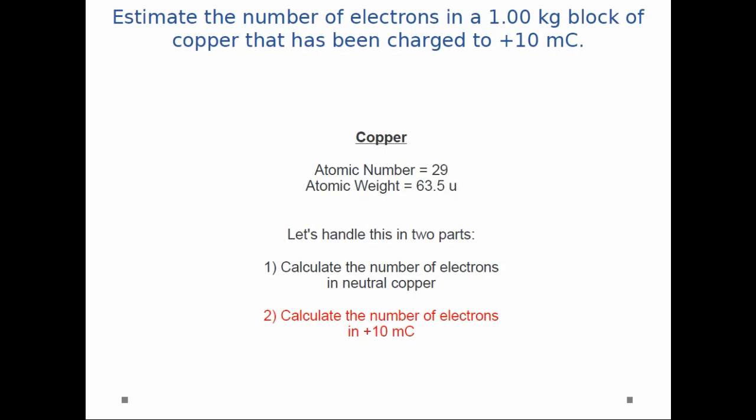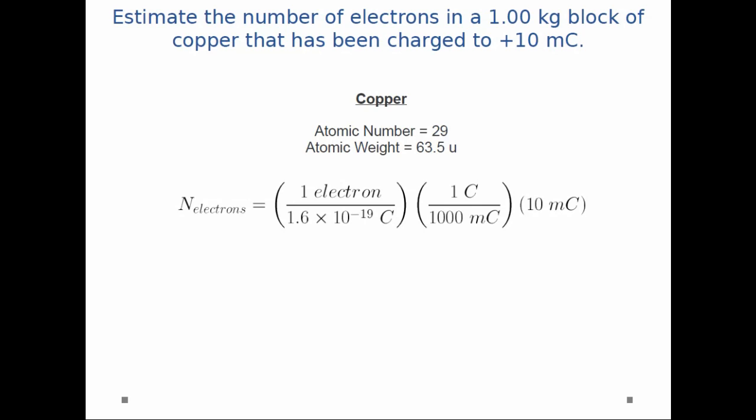Now that we've calculated the number of electrons in neutral copper, let's look at the plus 10 millicoulombs. I know 1 electron is 1.6 times 10 to the minus 19 coulombs, the elementary charge. I convert coulombs to millicoulombs: 1 coulomb is 1,000 millicoulombs. Then multiply by the total charge, 10 millicoulombs. When you plug in the numbers, you get 6.25 times 10 to the 16th electrons.